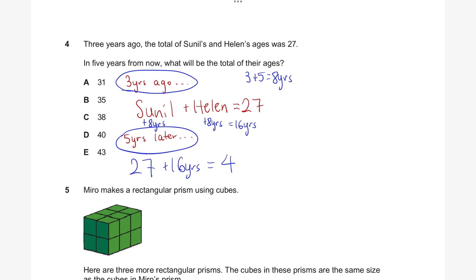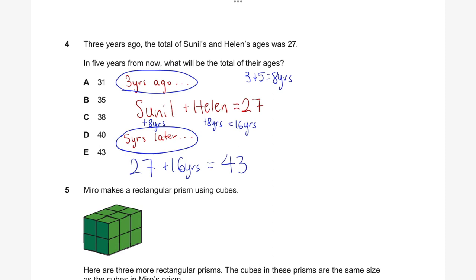To work out their total ages: 27 plus 16 equals 43. So the answer to question four is E, 43.